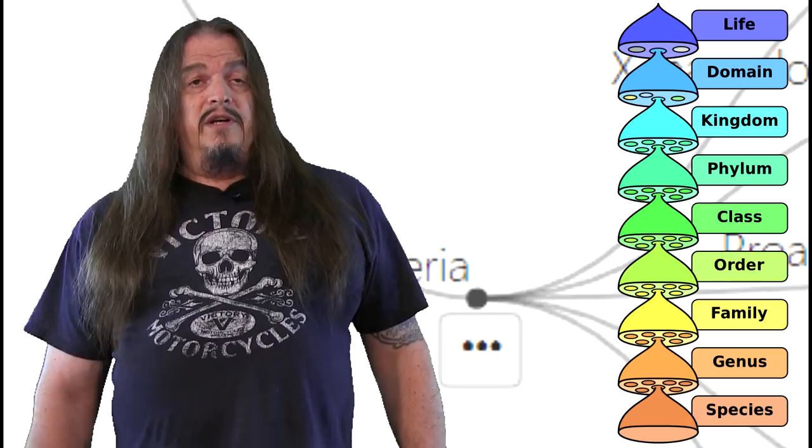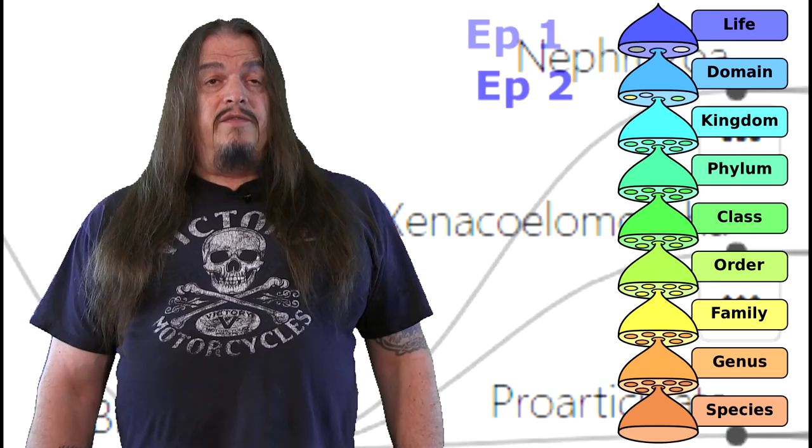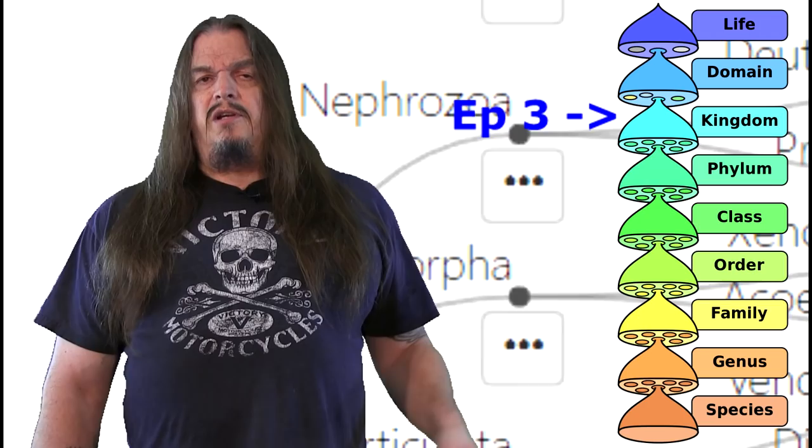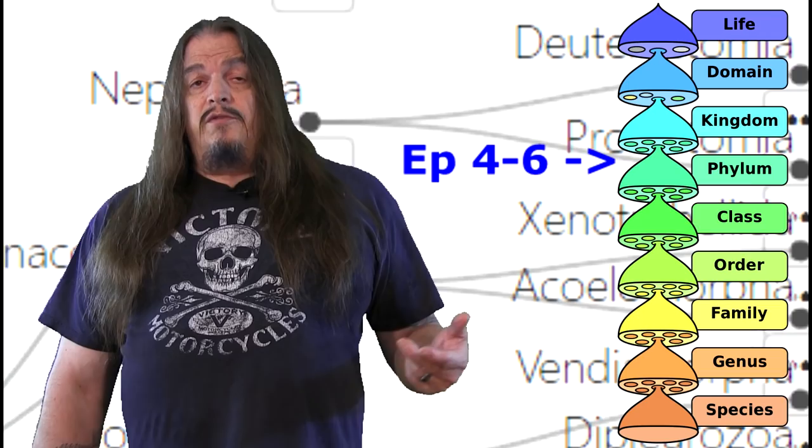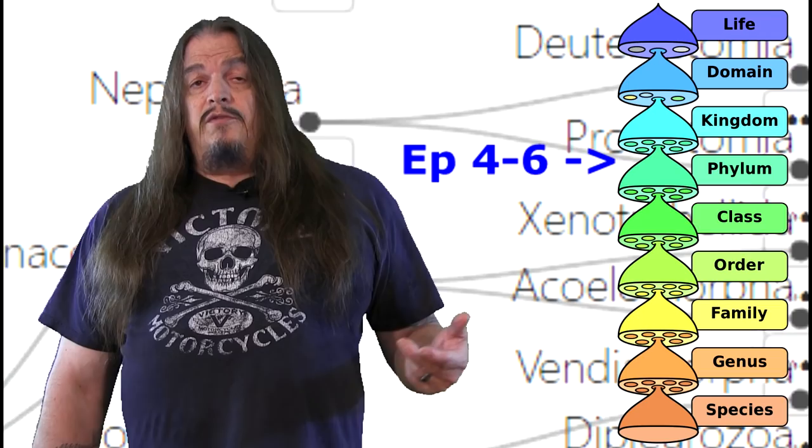The first episode of this series talked about the origin and definition of life. Episode two explained the different domains, but the third episode walked us through a half-dozen named clades between the domain and kingdom levels. Episodes four, five, and six explored a handful more intermediate clades before the seventh episode finally brought us up to our phylum.